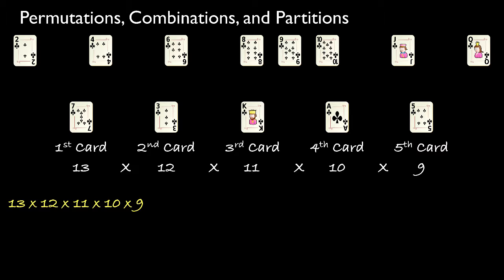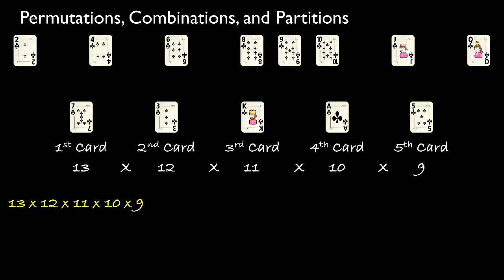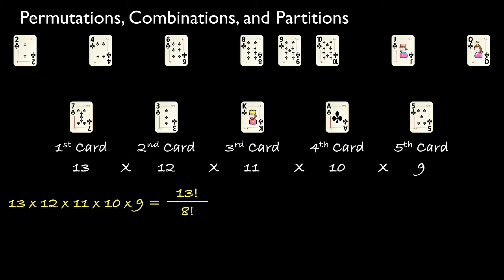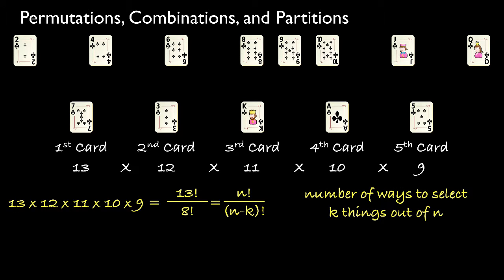For many situations we might encounter, it is convenient to use a shorthand notation for writing the mathematical formula for determining the number of ways to select k objects from n original objects. We can write 13 times 12 times 11 times 10 times 9 by first writing out 13 factorial — that is, 13 times 12 times 11 all the way down to 1 — and then dividing by the extra terms. The term in the denominator, 8 times 7 times 6 times 5 times 4 times 3 times 2 times 1, is known as 8 factorial. So we can write our result as 13 factorial divided by 8 factorial, which in general equals n factorial divided by (n minus k) factorial, for selecting k things from a collection of n things.